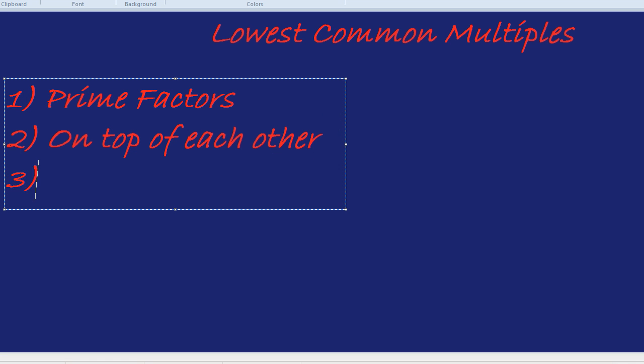And third, we take the smallest of the two in each column. So if we had 2 cubed and a 2, we'd take the 2. If we had 3 squared and 3 cubed, we'd take the 3 squared. If we had 5 and nothing, we'd take nothing.